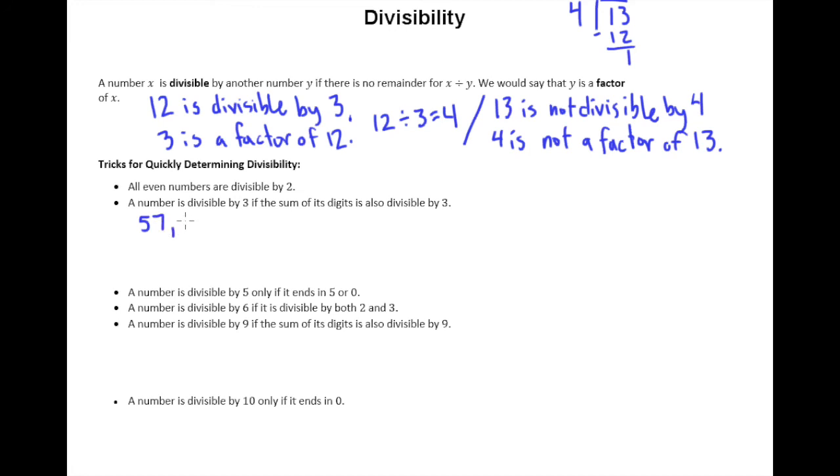If I write down the number 57,921 I can tell you right off the bat that this is divisible by 3. And you might wonder how could you possibly know that? Well just by using this trick I'm going to add up all of the digits that make up 57,921. When I add those up, 5 and 7 is 12 plus 9 is 21 plus 2 is 23 plus 1 is 24.